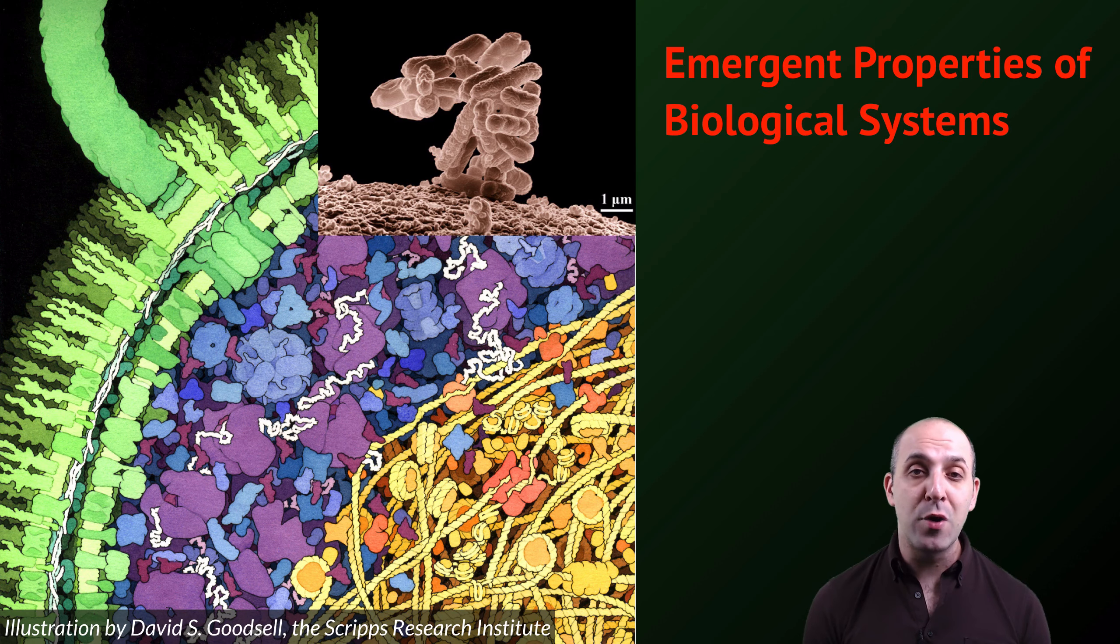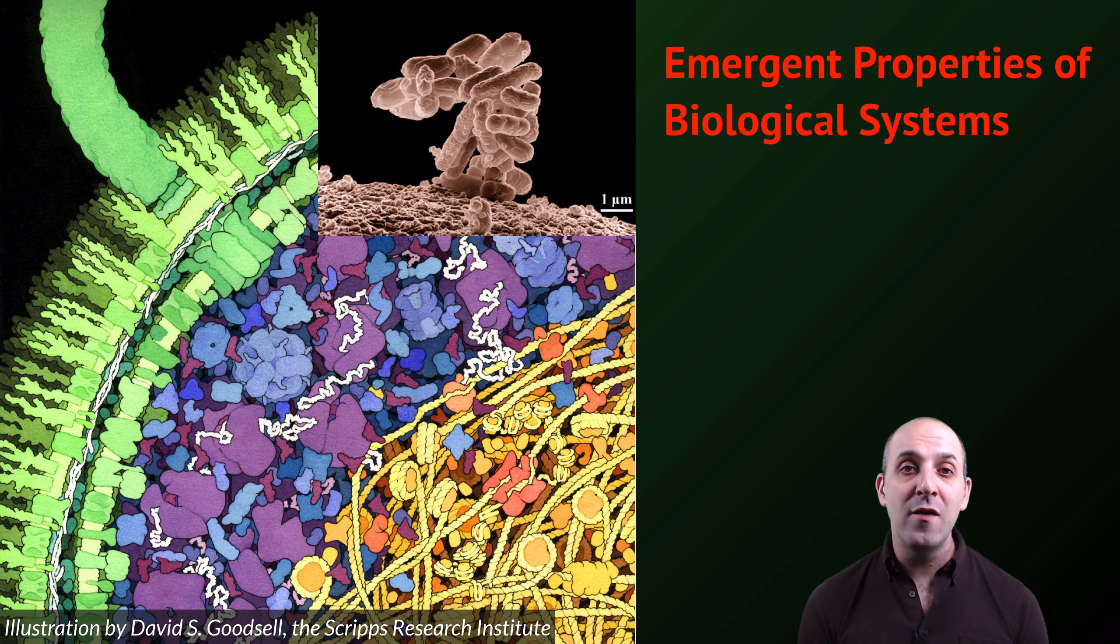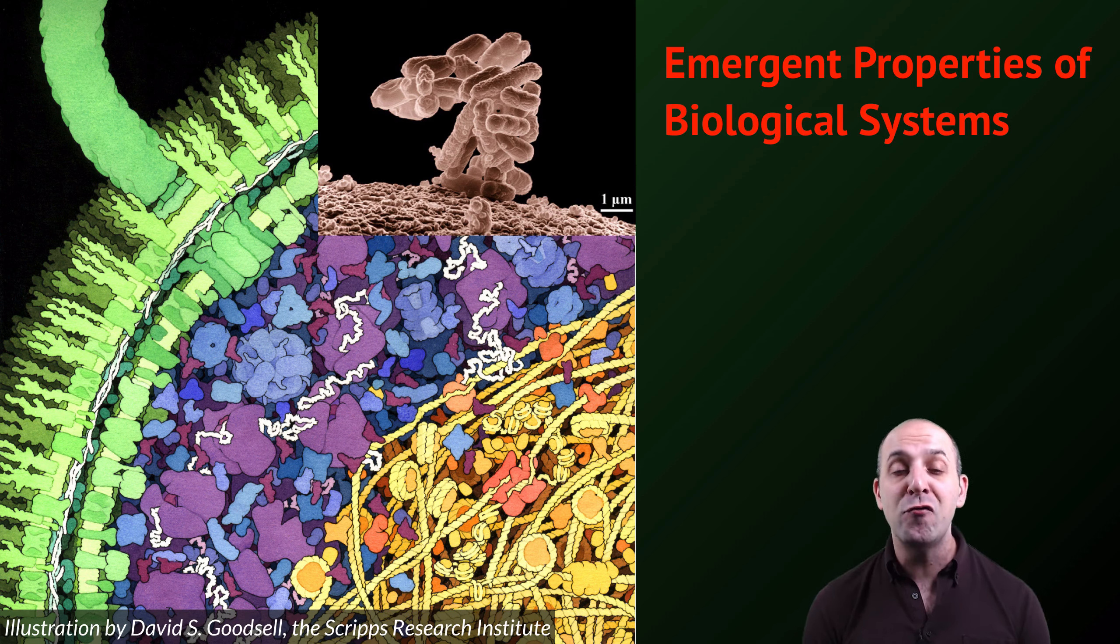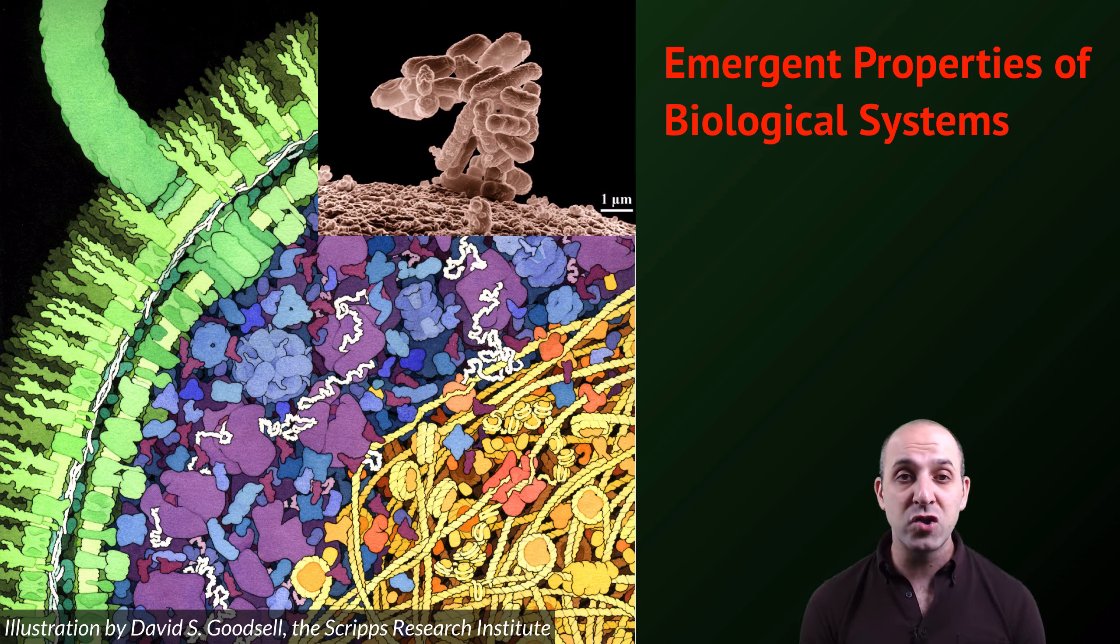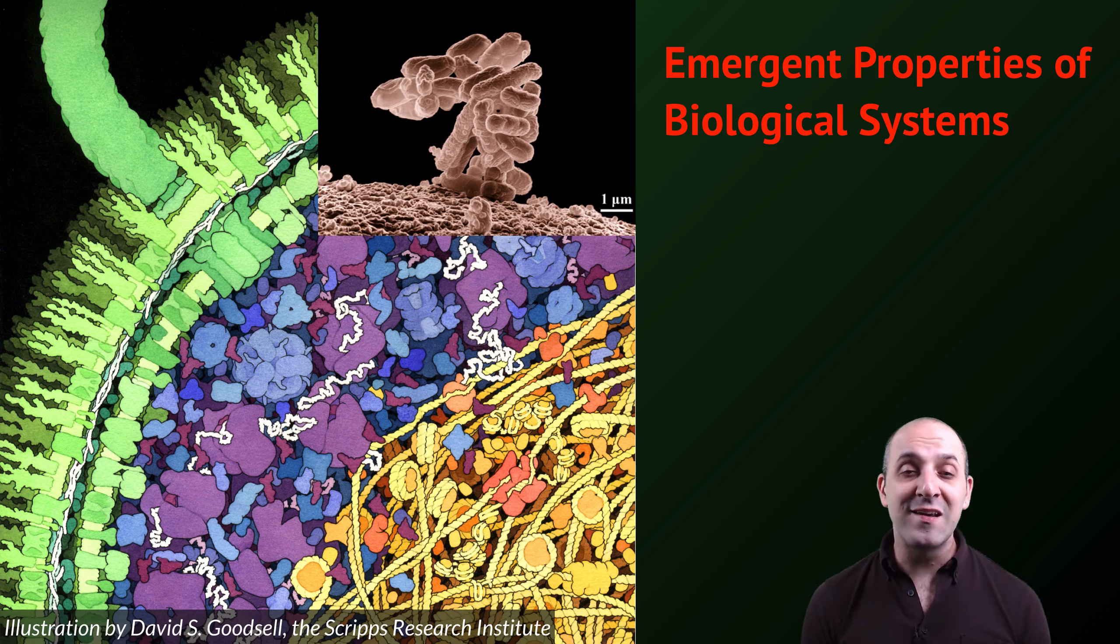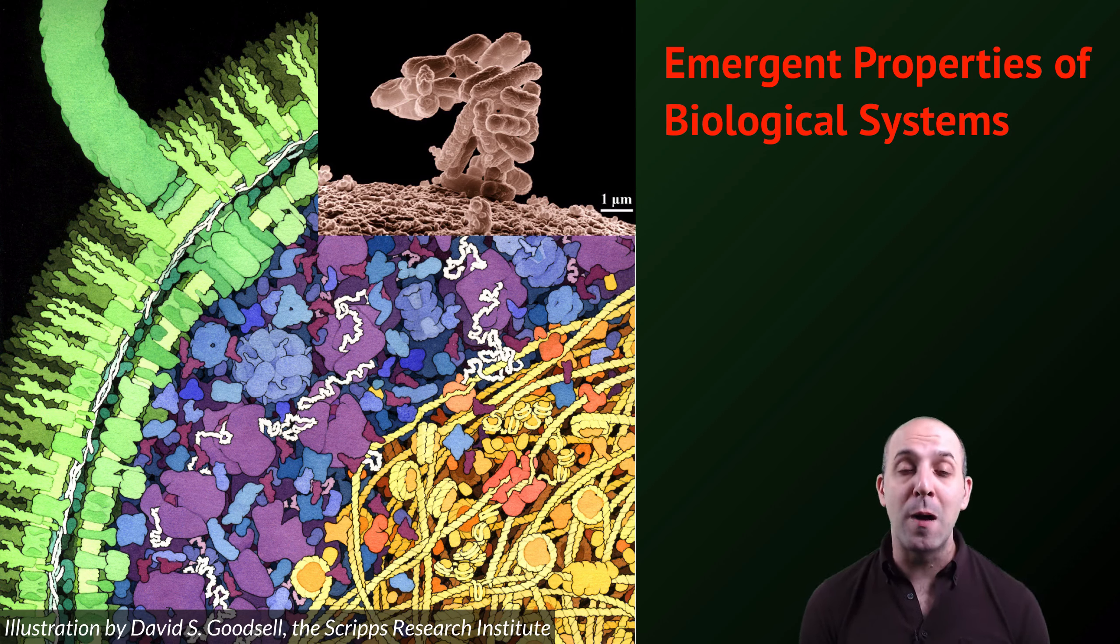We've talked about emergent properties before, but this is really the root of where those properties come from. They come from the interactions of the components of the system at the level of organization below the level at which we see those properties. The properties of a system like an E. coli bacterial cell, shown here both as a micrograph and as an illustration, come about as a result of all of the interactions of the components that are making up that system. Without those components together and interacting with each other, we would not get the properties of the E. coli cellular system. That's emergent properties.